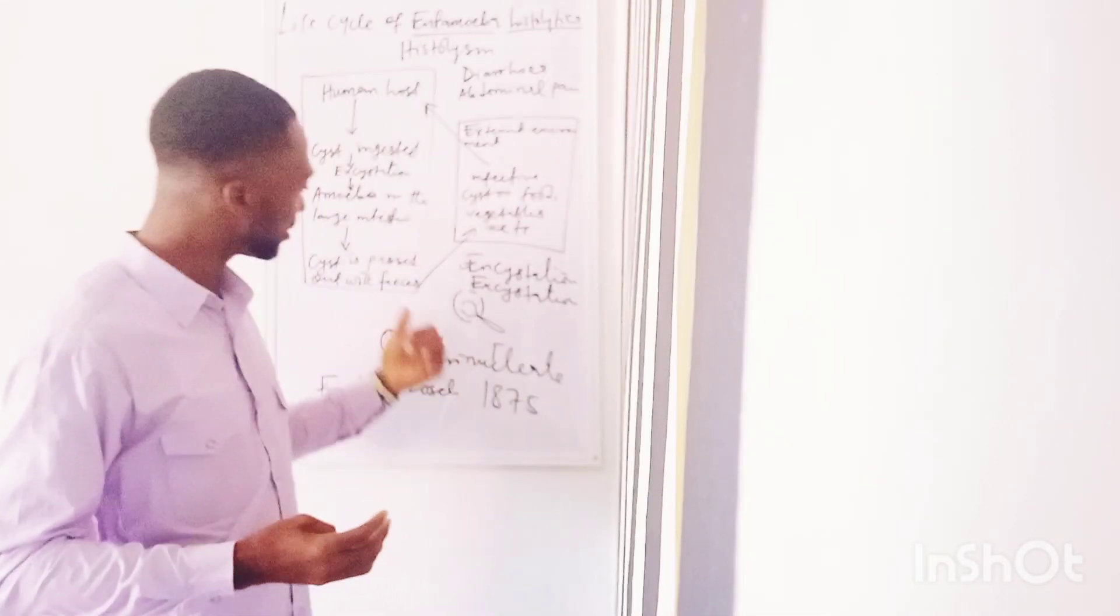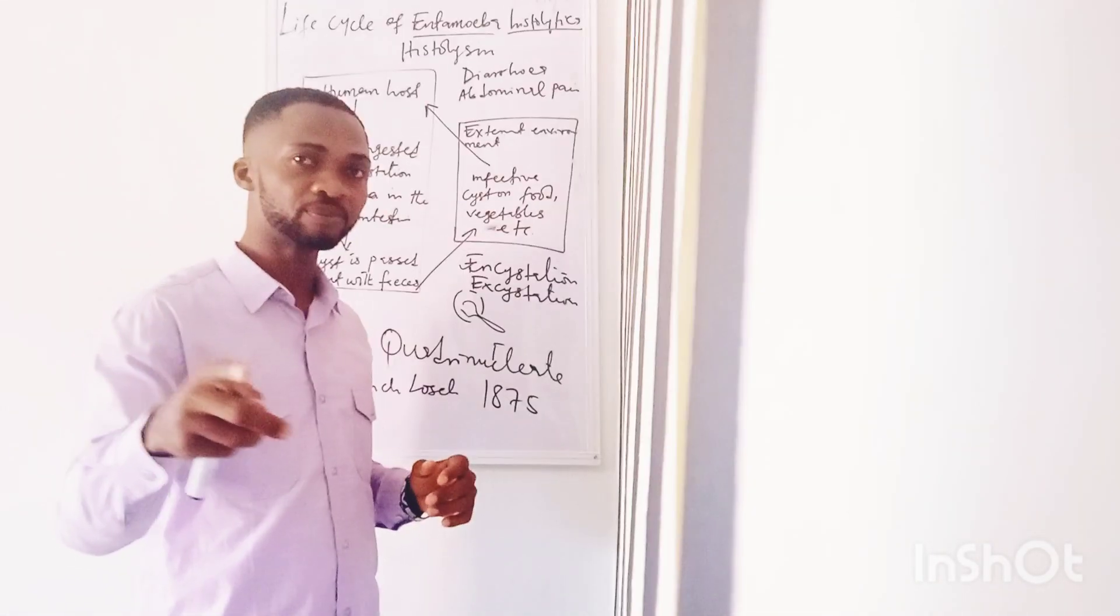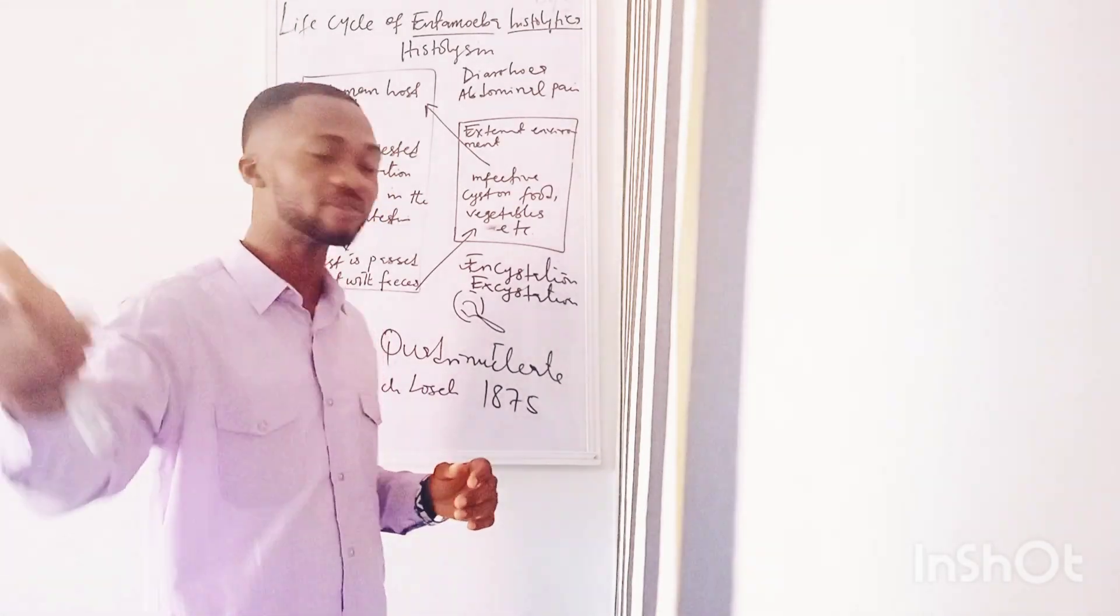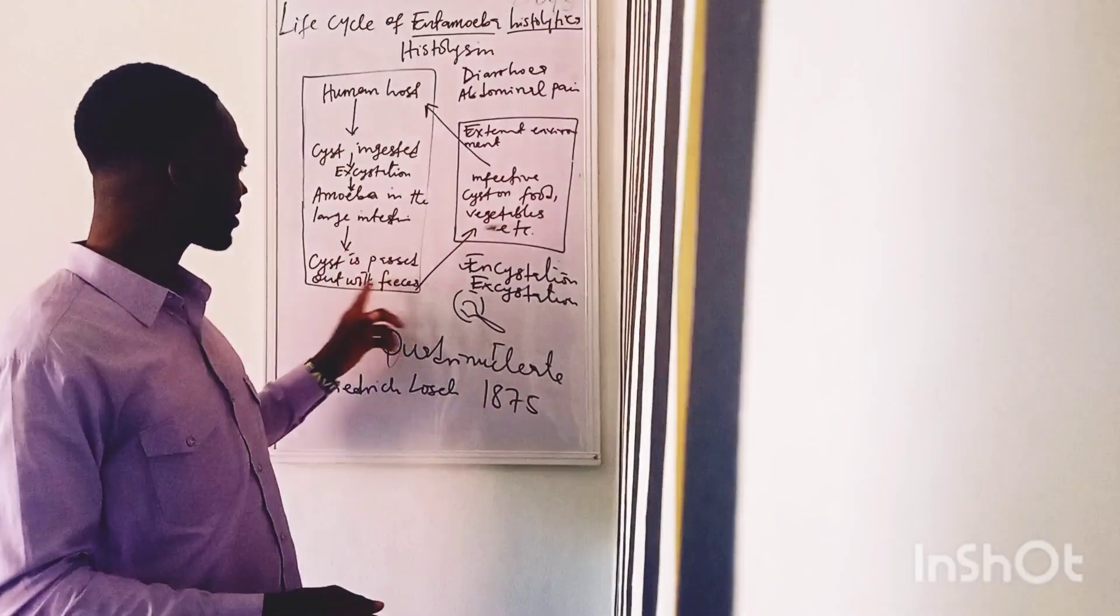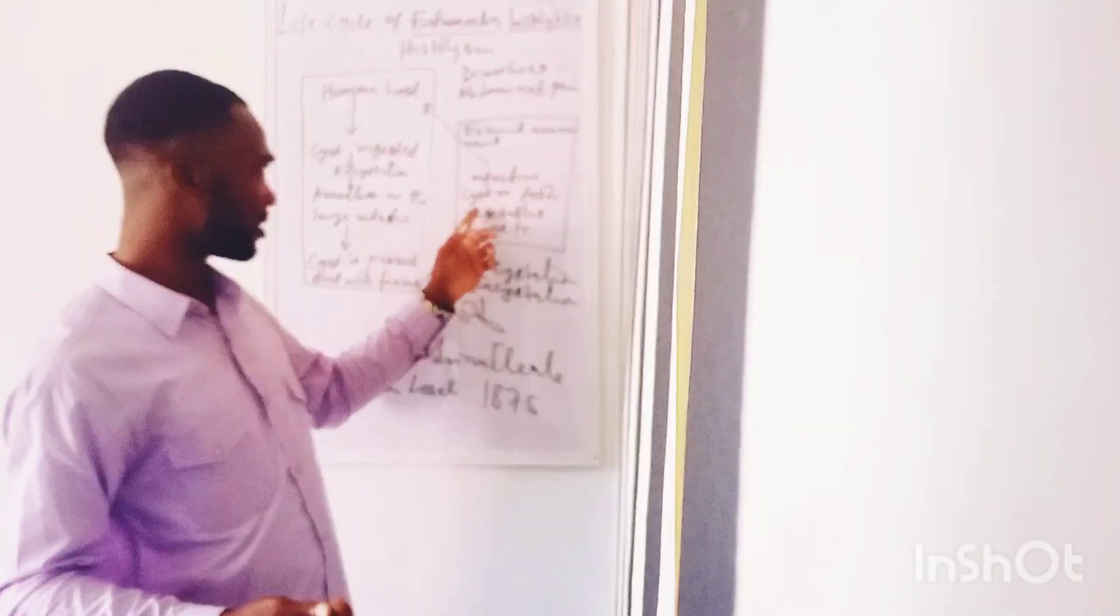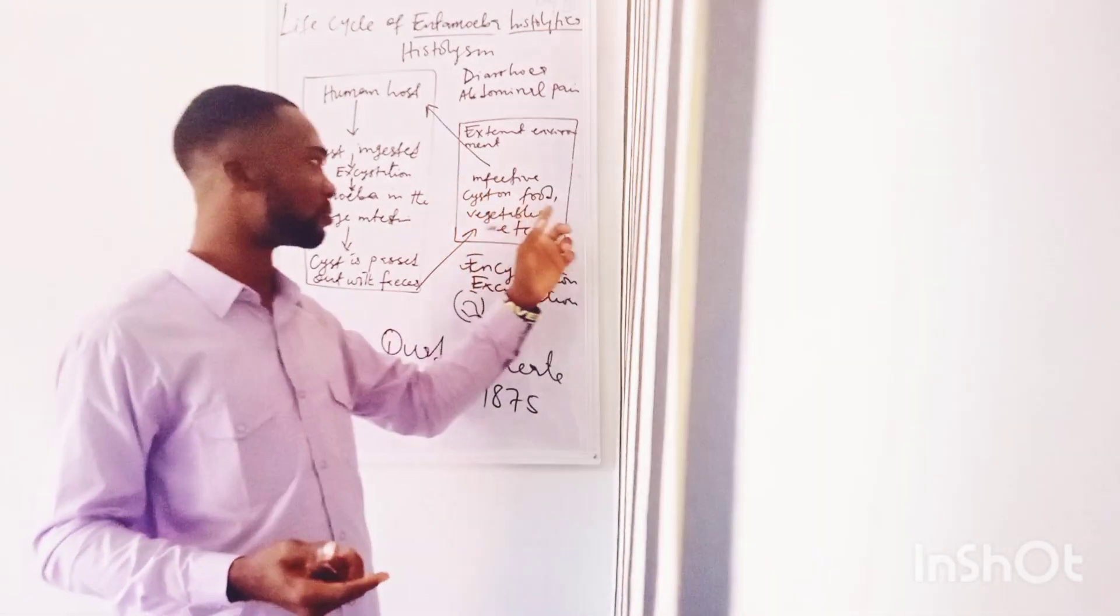So at this stage now, it's about leaving the body. And it's leaving the body at a stage that's called the infective stage. So you see the cyst is passed out with the feces into the external environment. And once it gets to the external environment, we now have cysts on food or vegetable, like I earlier explained.